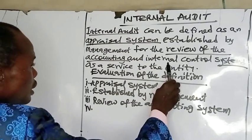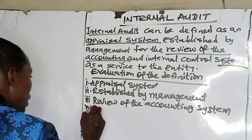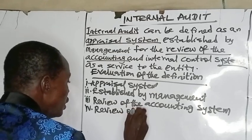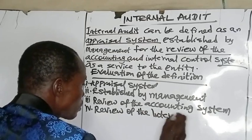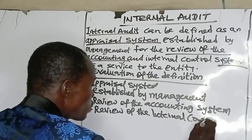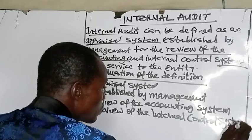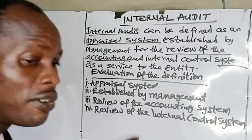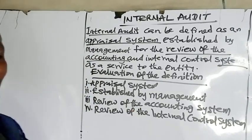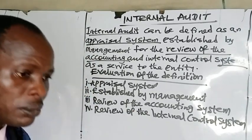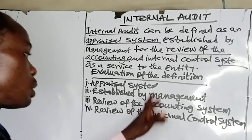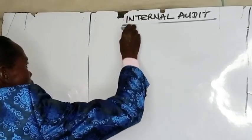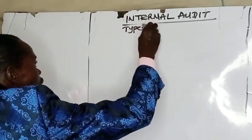Number four key concept is the review of the internal control system. Internal audit involves the review of the internal control system, which covers systems of financial controls, operational controls, and compliance controls.